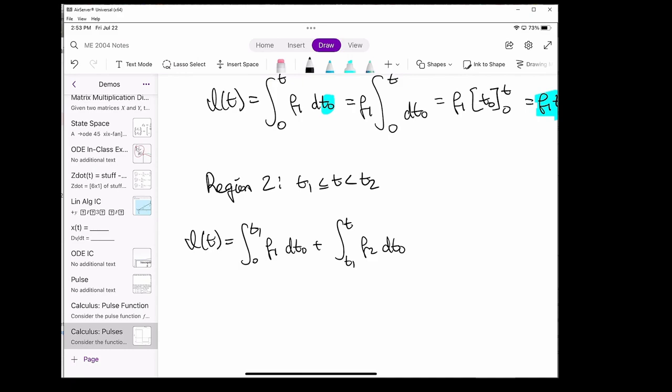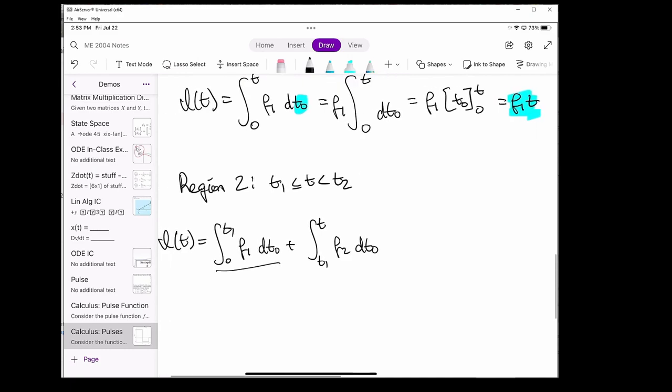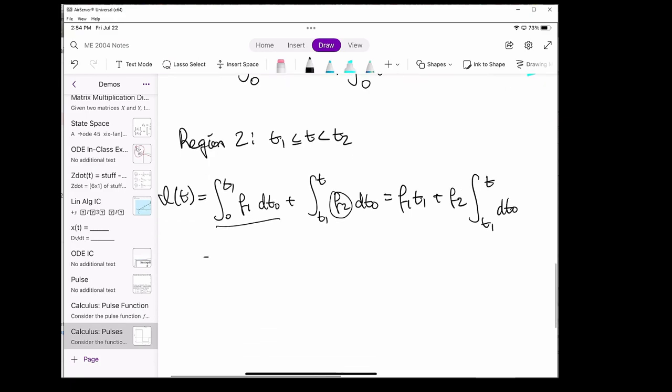We already know from the first part that the integral of this is just f1 times t, but now if we change this t up here to t1, then this will become f1 times t1. And once again, we can pull the f2 here outside the integral because it's a constant. The integrand of the integral is just 1, so we can rewrite I of t as f1 t1 plus f2 times t0 evaluated from t to t1. And that gives us I of t equals f1 t1 plus f2 times the quantity t minus t1.